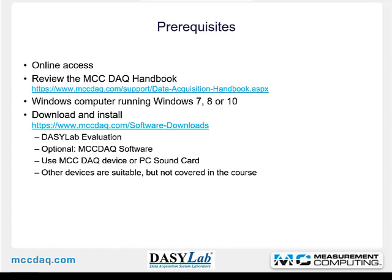Before you start the class, you should ensure that if you are working online, you have online access. Review the Measurement Computing DAC Handbook — the URL is listed here. You need a Windows computer running Windows 7, 8, or 10. You should download and install from the Measurement Computing website the DAISYLAB evaluation, and optionally the MCC DAC software, which includes drivers and support for Measurement Computing devices. You can use an MCC DAC device, the demo board, or even your PC sound card. This class will be using a Measurement Computing USB 201.